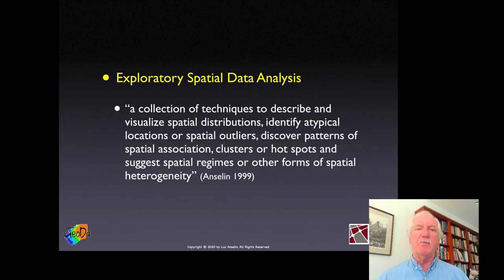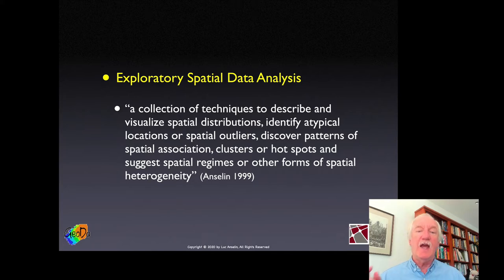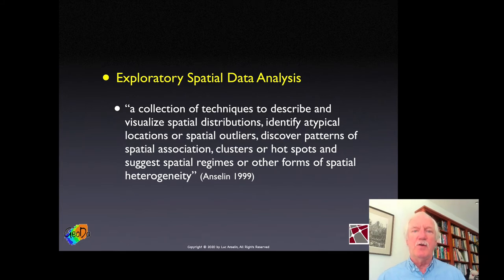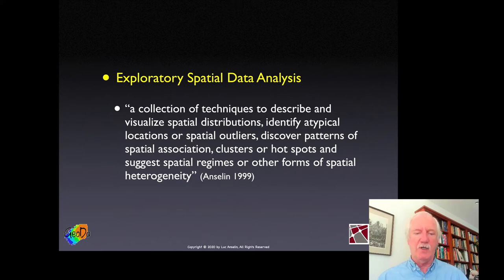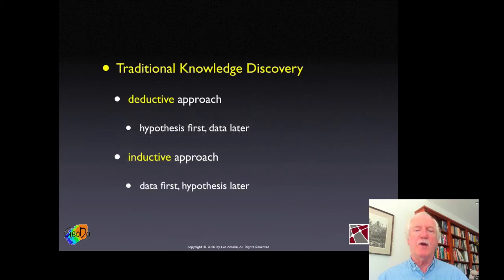My favorite term is exploratory spatial data analysis, which I defined as a collection of techniques to describe and visualize spatial distributions — starting by describing the distribution as a whole, identifying atypical locations (spatial outliers), discovering patterns of spatial association (clusters or hotspots), and suggesting spatial regimes or other forms of spatial heterogeneity. Spatial regimes are an example: if the regression slope in one part of the map looks like this, and in another part it looks like that, those two parts are called spatial regimes — a form of spatial heterogeneity.